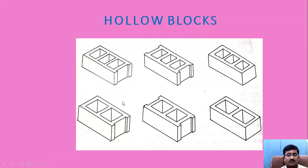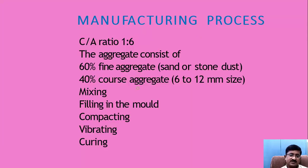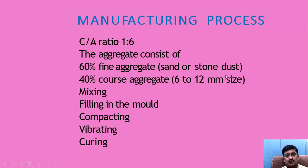How economy can be achieved by using hollow blocks — that we have seen — and what are the various advantages associated with hollow block construction. In the solid blocks, we will see regarding the manufacturing process. The cement to aggregate ratio is generally maintained at 1 to 6. The aggregate consists of 60% fine aggregate — sand or stone dust — and 40% coarse aggregate of 6 to 12 mm size.